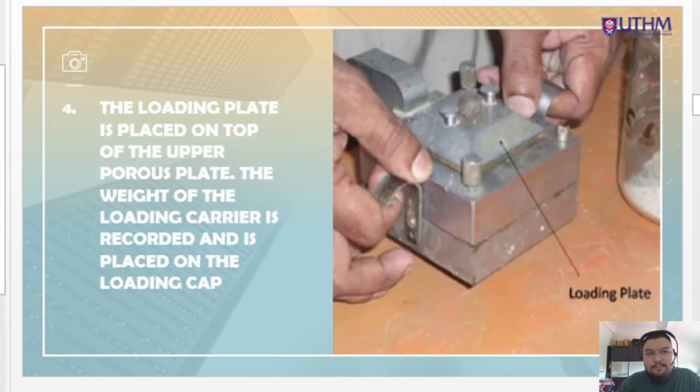Next step is number four. As you can see, step number four is the loading plate is placed on top of the upper porous plate. The weight of the loading carrier is recorded and is placed on the loading cap. As you can see, the step is applied in the picture next to the description of the step.